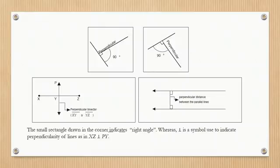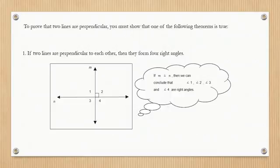The inverted T symbol is used to indicate perpendicularity of lines, as in XZ perpendicular to PY. To prove that two lines are perpendicular, you must show that one of the following theorems is true. Theorem 1: If two lines are perpendicular to each other, then they form four right angles.